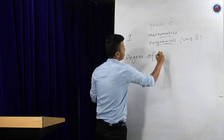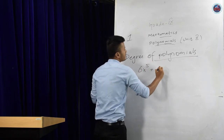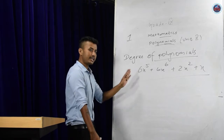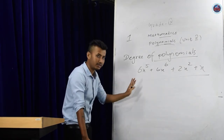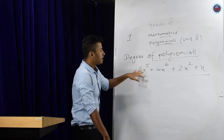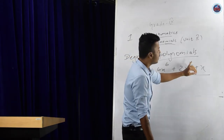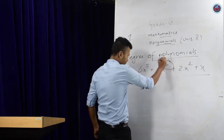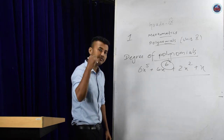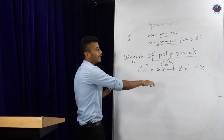Degree of a polynomial. Consider the expression: 6x⁵ plus 6x⁶ plus 2x² plus x. Can you tell me what is the highest power of x? In the first term, power is 5; second term, power is 6; third term, power is 2; fourth term, power is 1. The highest power here is 6. So the degree of a polynomial is the highest power of any variable in an equation. The degree of this polynomial is 6.